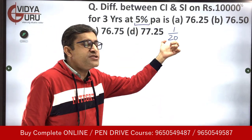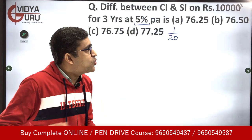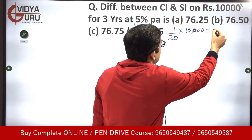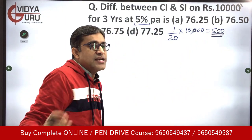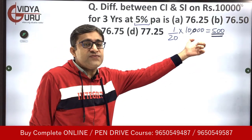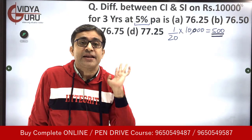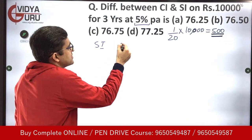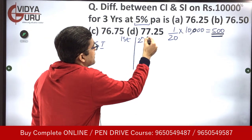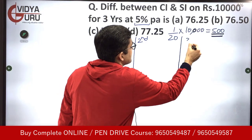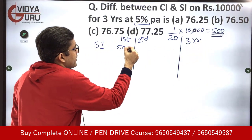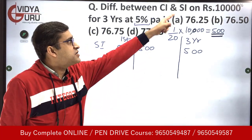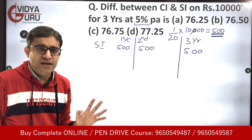This 500 is the interest that you earn every year in case of simple interest. In the first year, second year, and third year it will remain the same — 500, 500, and 500 — because you only get interest on the original sum, on the principal. That is the story of simple interest.